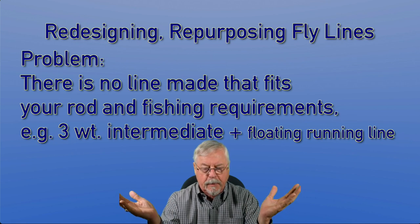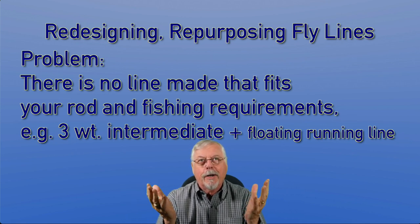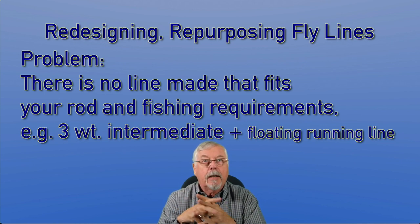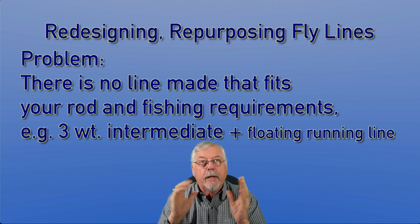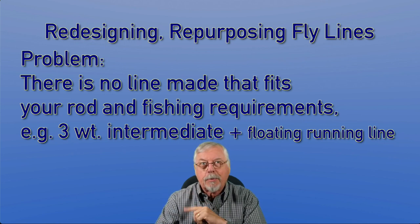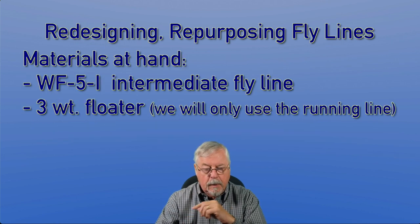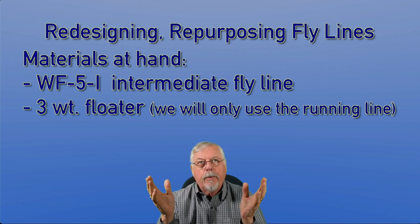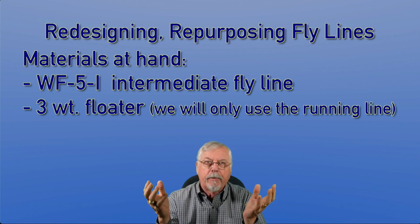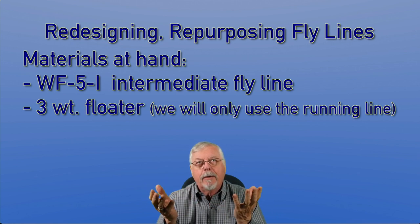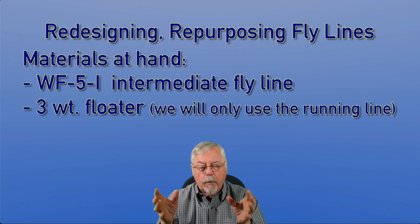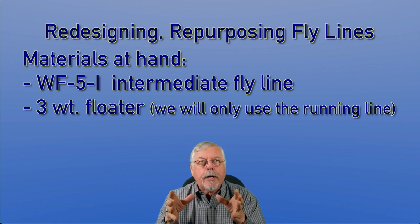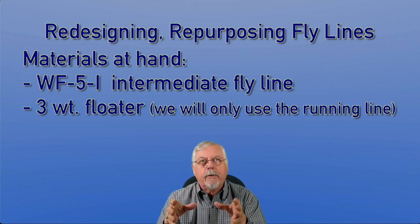So here's our problem: we want a line that doesn't exist. In this case, I want a three-weight intermediate fly line with a floating running line — the head is intermediate, the running line floats. The materials I've got at hand are a weight-forward five-weight intermediate line and either a three-weight floater or an equivalent piece of running line, because all we're going to use from a three-weight floater is the running line part.